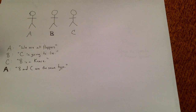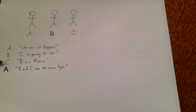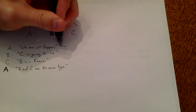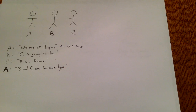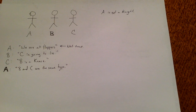Let's go over that one more time. If A said the truth, then C lied, which means that B told the truth, so B is not a flopper. Therefore, this statement is not true. Since that statement is not true, we know that A is not a knight. A could still be a flopper or a knave.